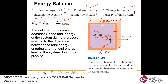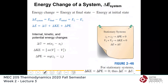Since heat and work are both forms of energy they can be added. We use the energy balance: total energy entering the system minus total energy leaving the system equals the change in total energy of the system. Symbolically, E_in minus E_out equals ΔE. All observations and experiments confirm this relation, and we confidently say energy is conserved — this is the First Law of Thermodynamics.